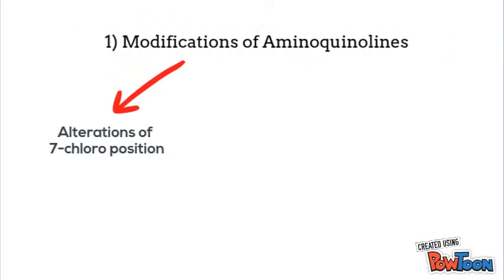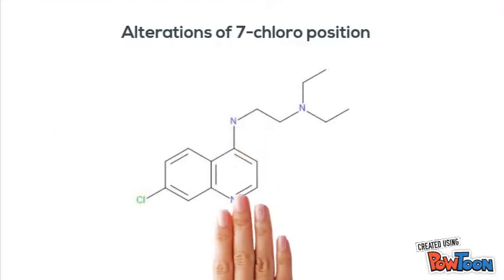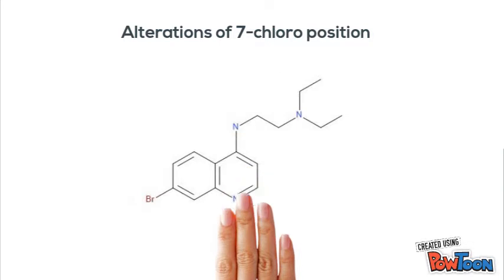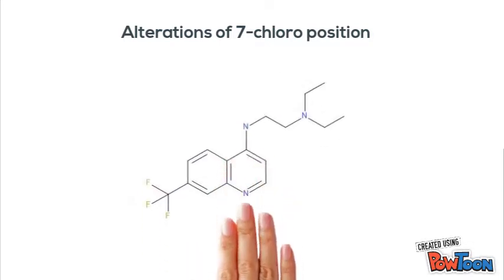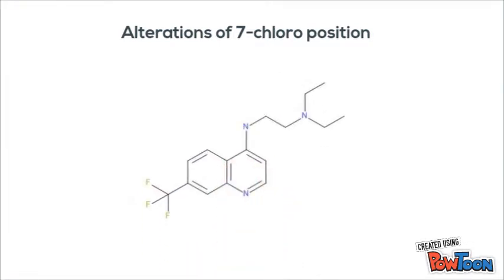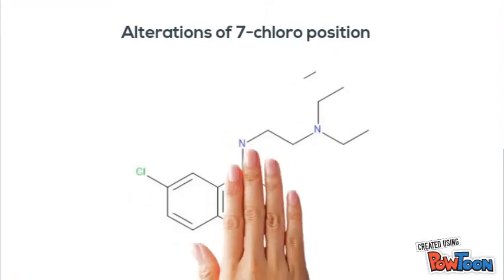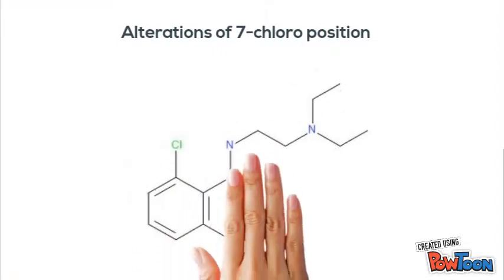In terms of the modification of aminoquinolins, we tried to alter the 7-chloro position by changing the chlorine atom to fluorine, bromine, and trifluoromethyl group. We even tried to change the chlorine position from the 7th position to the 6th, 8th, and 9th position.